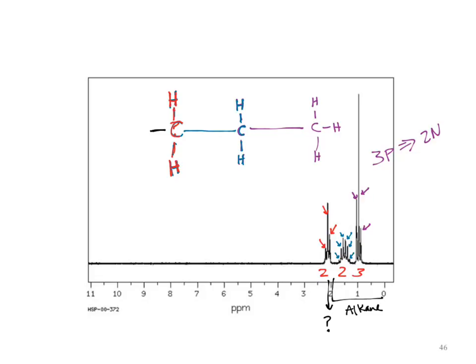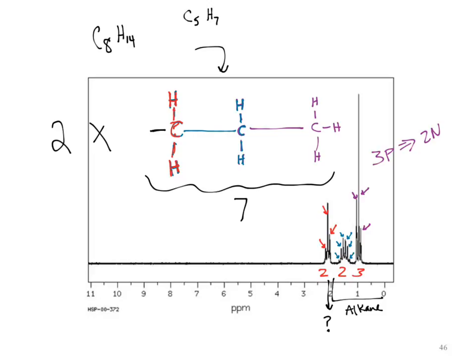This is where I would take advantage of the mass spec. The mass spec said C8H14. I'm missing carbons and hydrogens — five carbons and seven hydrogens. If I doubled this thing, that accounts for all my hydrogens and takes care of some carbons. And I don't add more carbons or hydrogens to either NMR because of symmetry — I'm adding the exact same piece.